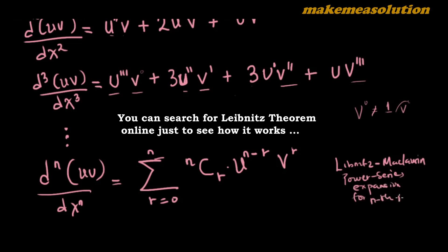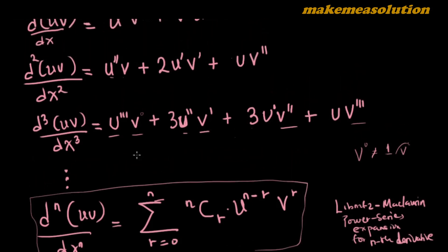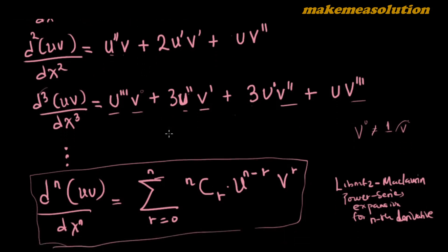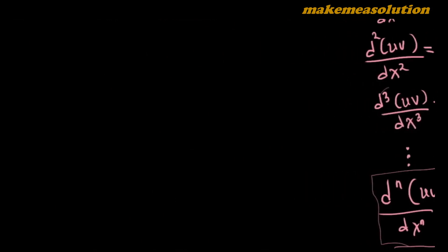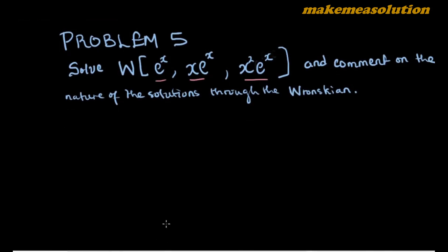Rather than memorizing the formula itself, pay attention to how it's built: the derivative order of one function decreases while the other increases, and in each term the orders of differentiation sum to the total number of differentiations. We will now use this method to attack problem five.